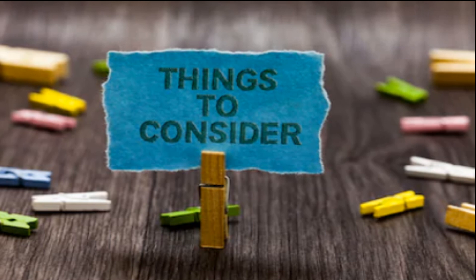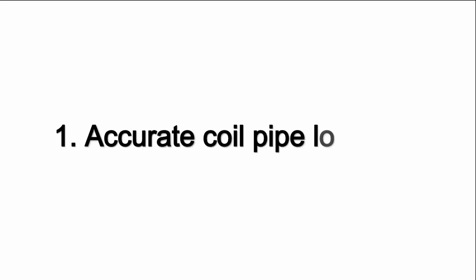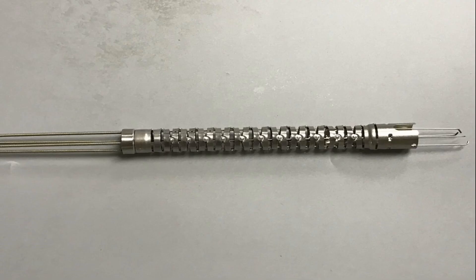There are certain factors to take into consideration when identifying a good coil pipe assembly. The first factor is accurate coil pipe location. This minimizes drag where the cable enters the bending section.